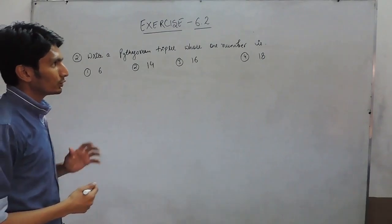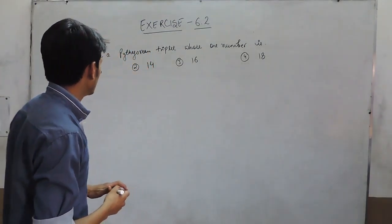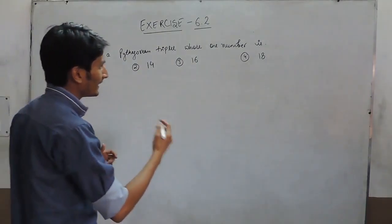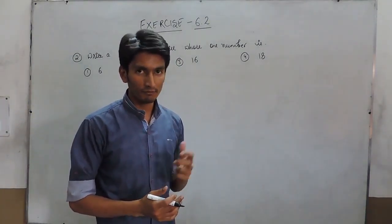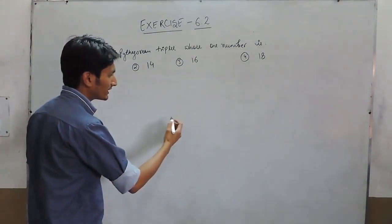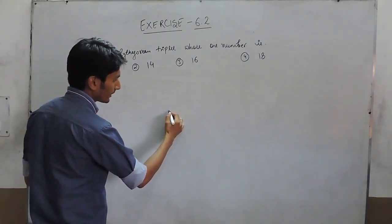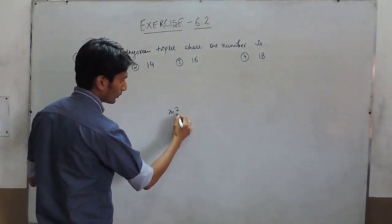Before solving this, you have to know or we must know one thing: any number which is greater than 1 has a particular formula for the Pythagorean triplet that is m² + 1, m² - 1, and 2m.